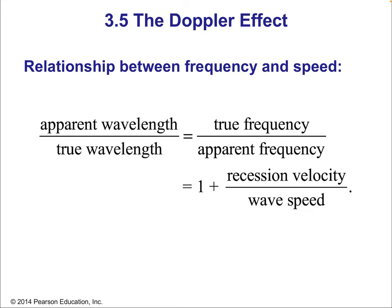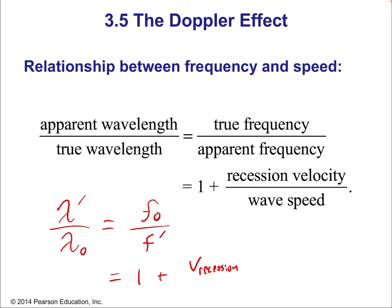The relationship between frequency and speed: the apparent wavelength λ' divided by the true wavelength λ₀ equals the true frequency divided by the apparent frequency, or we can rewrite it as one plus the recession velocity divided by the wave speed — the speed of light, C = 3 × 10⁸ m/s. The Doppler effect depends only on the relative motion — it doesn't matter if the observed object is moving or you're moving, it's the same effect.